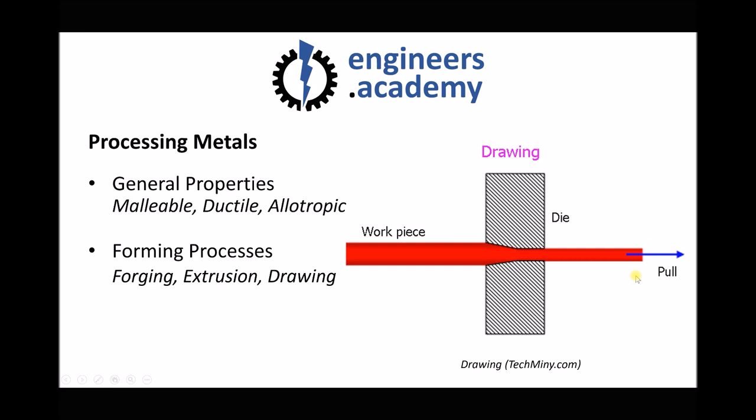Next we have drawing, which is very similar to extrusion. Except instead of the applied force being on the left hand side forcing the material through the die, it's actually going to pull the material out of the other side of the die. So rather than a pushing force we have a pulling force. Therefore the material needs to be ductile in order to be drawn into a wire. So our metals can be processed using a range of different forming processes because they tend to be malleable and ductile, and where they are not, allotropic metals can be softened using heat.